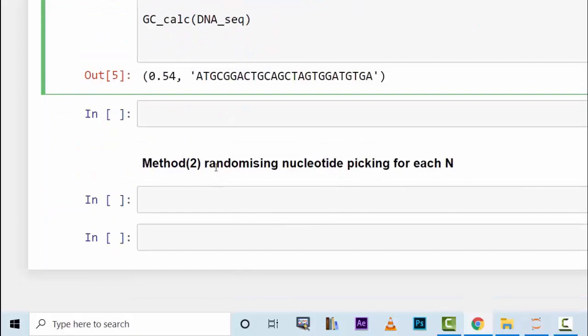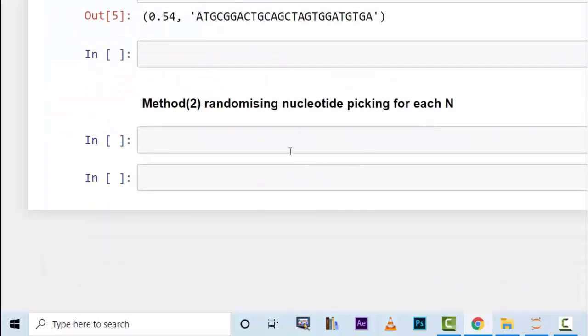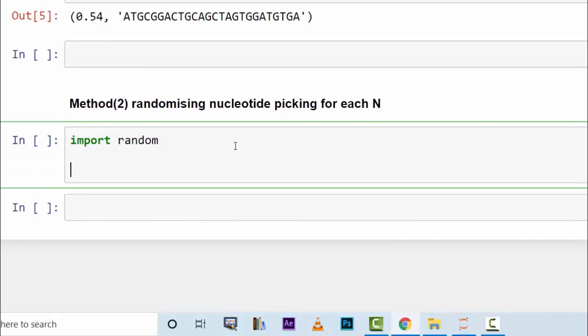The second method is to use randomized nucleotide picking for each N occurrence in your DNA sequence. So we are going to use the same DNA sequence which is this one as a sample DNA and work on it. The first thing to do is to import a library called random. Then define GC_calculator.